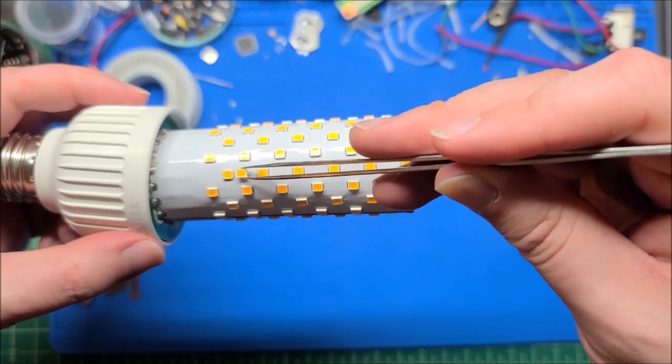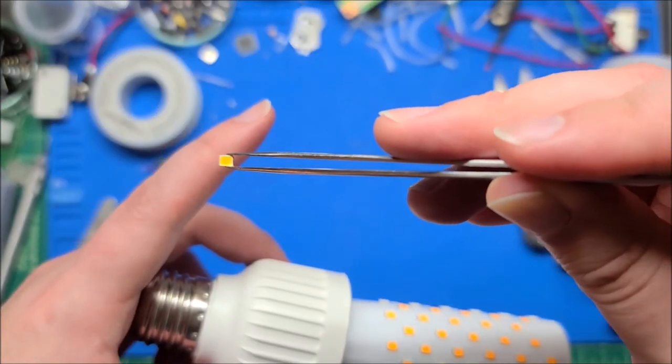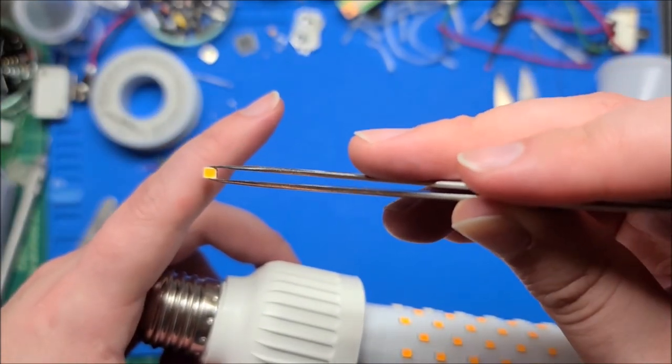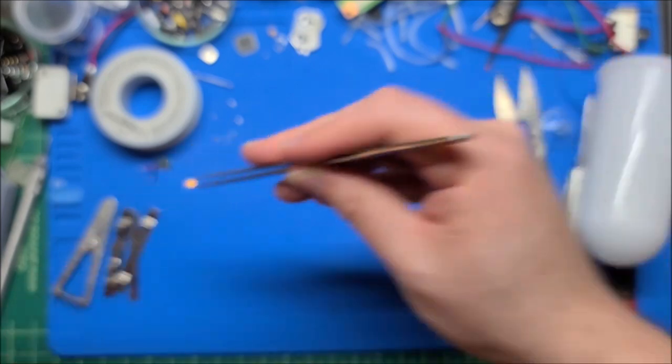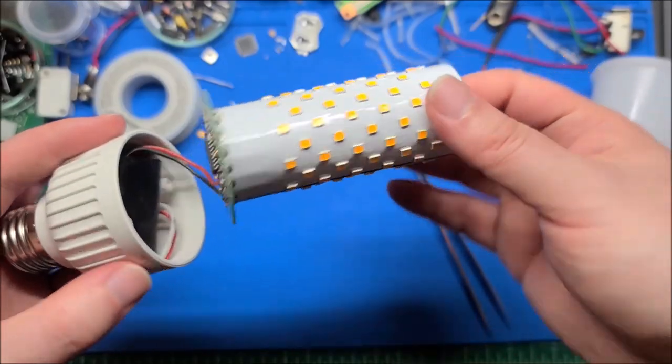And it looks like maybe the phosphor is a slightly different shade, or maybe this one I pulled from a dead bulb. The LED itself still works, but it was cooked pretty well. So maybe that changed the color a little bit. Yeah, you can see it's the same exact package though. And wow, that just came out.